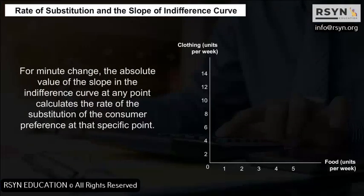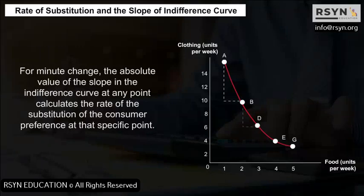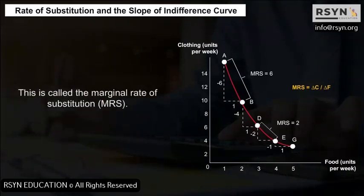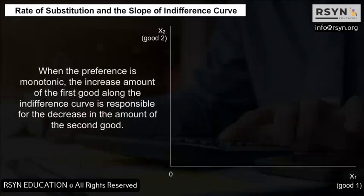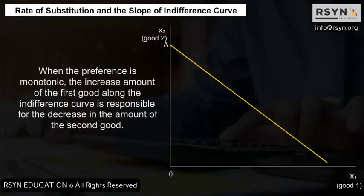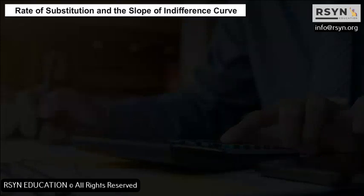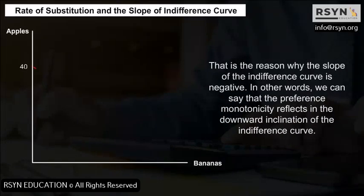For a minute change, the absolute value of the slope of the indifference curve at any point calculates the rate of substitution of the consumer's preference at that specific point. This is called the Marginal Rate of Substitution (MRS). When the preference is monotonic, an increased amount of the first good along the indifference curve is responsible for the decrease in the amount of the second good, which is why the slope of the indifference curve is negative.